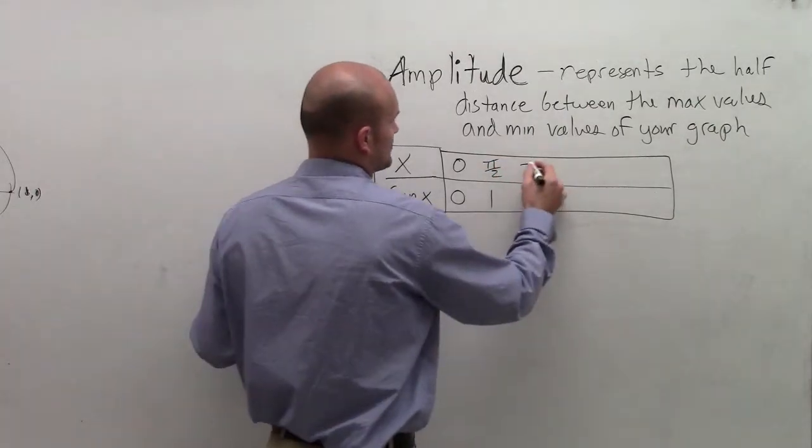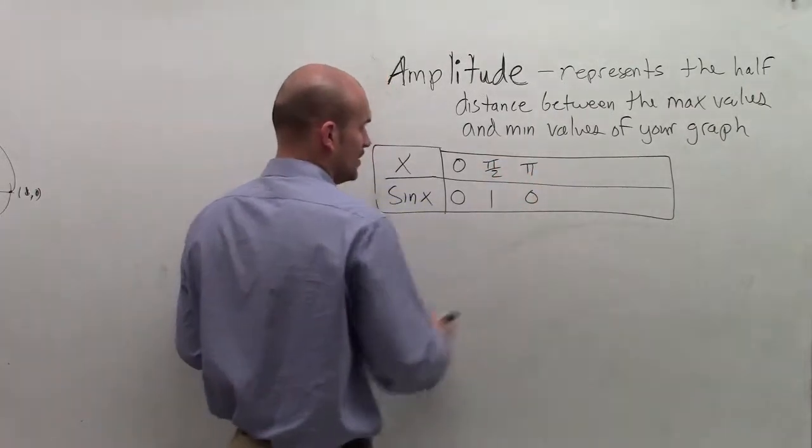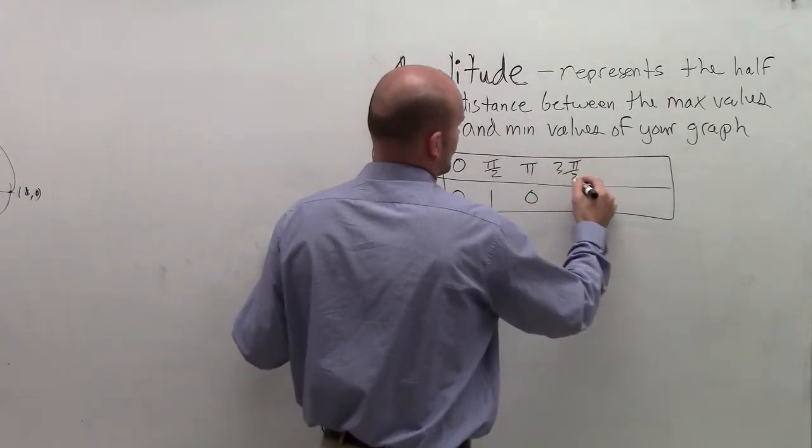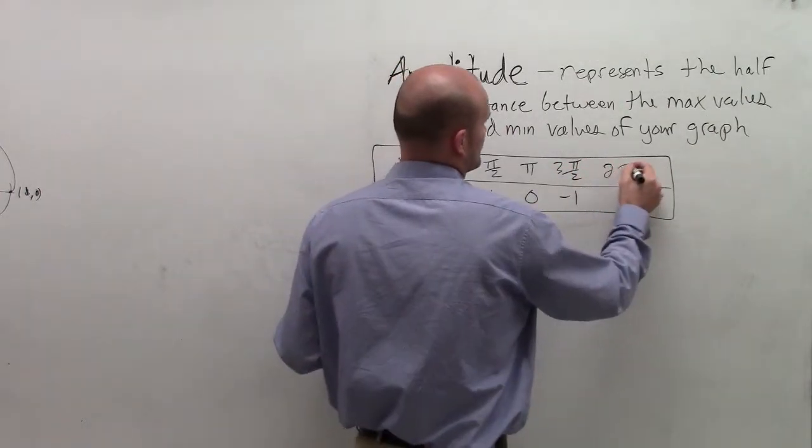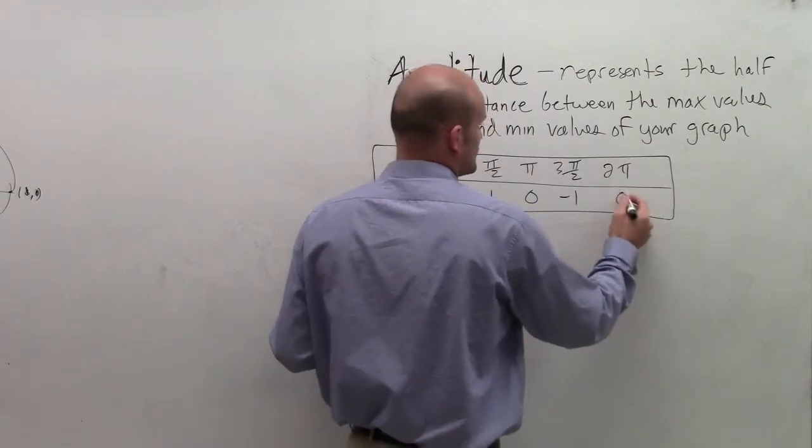Then at pi over 2, sine equaled 1. At pi, sine back equaled 0. At 3 pi over 2, sine equaled negative 1. And at 2 pi, sine equaled 0 again.